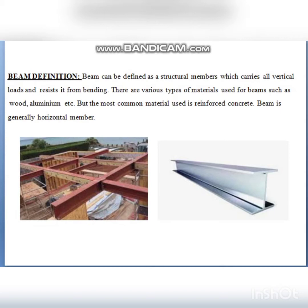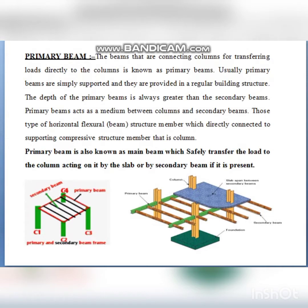A primary beam is one that connects columns or secondary beams, transferring loads directly to the column. Column to column, directly connected to the column is known as a primary beam. A primary beam is simply supported.